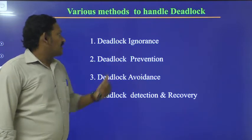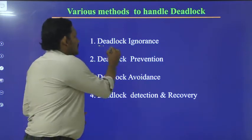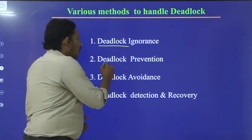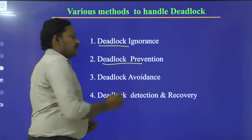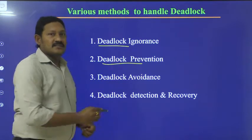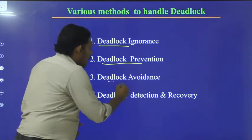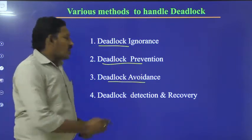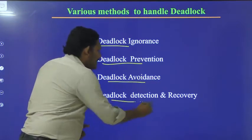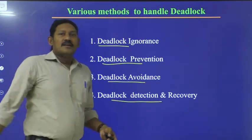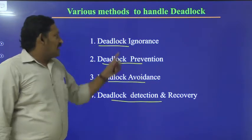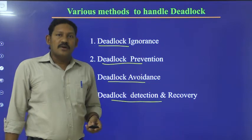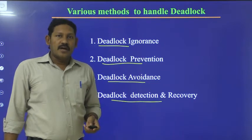The first one is deadlock ignorance. Second, deadlock prevention. Next, deadlock avoidance. And last but not least, deadlock detection and recovery. We will see each of these methods in detail one by one.